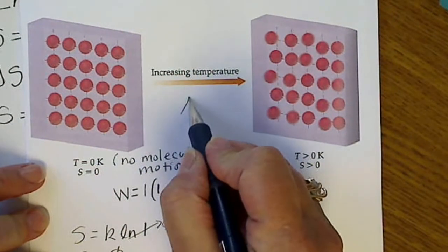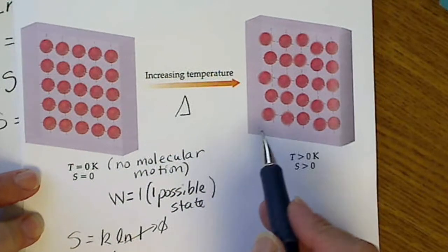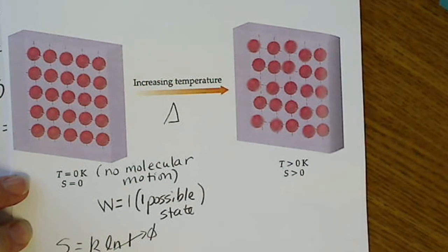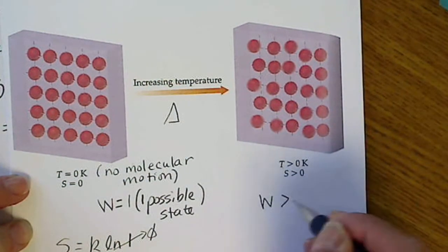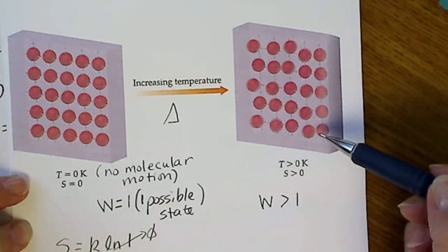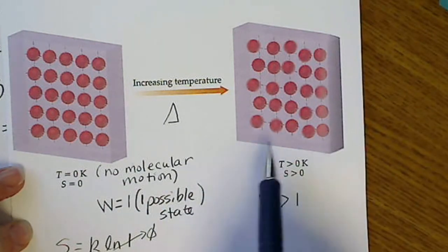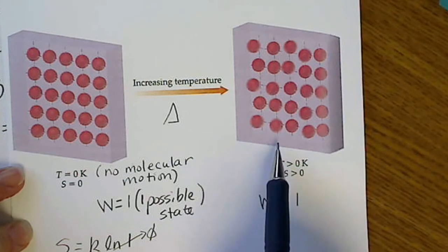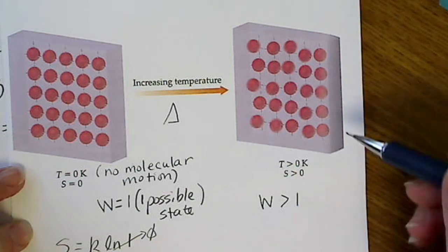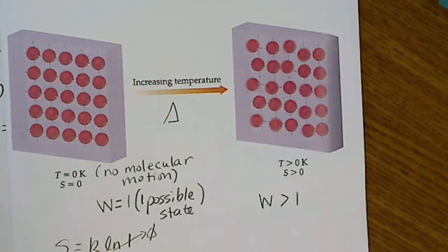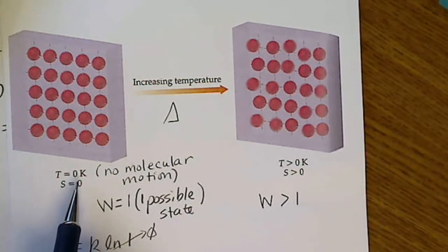As soon as we add heat, we start seeing motion from the atoms, so W is definitely going to be greater than one. We can think of it as taking a photograph every second — if each photograph is not identical, we have different states. This is why the third law of thermodynamics, which defines where entropy is zero, must occur at absolute zero degrees Kelvin.